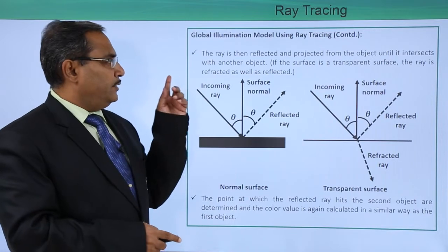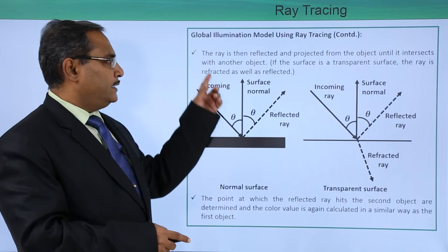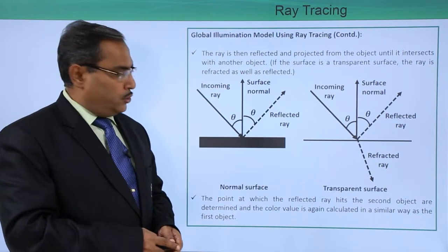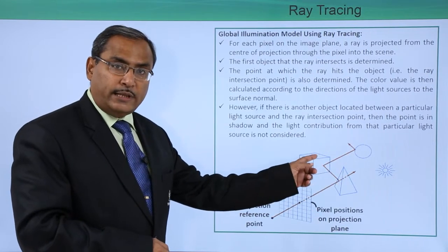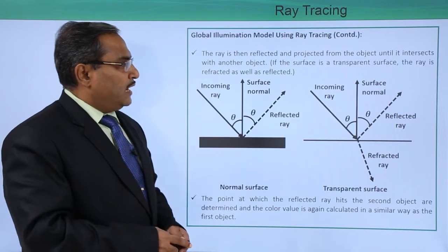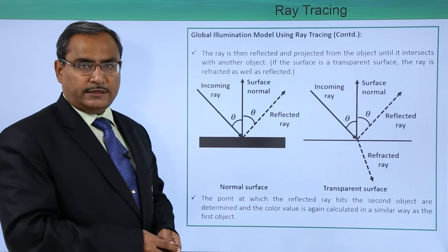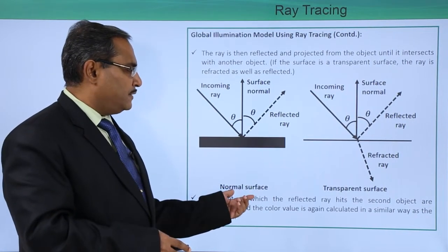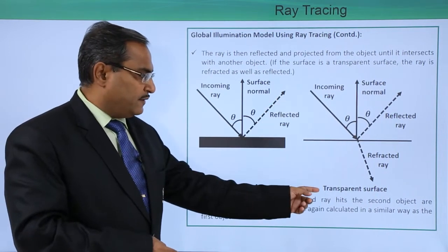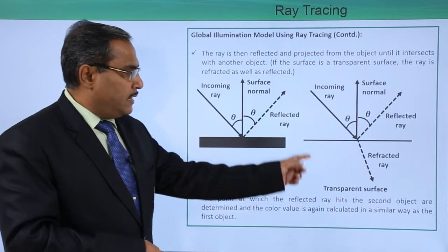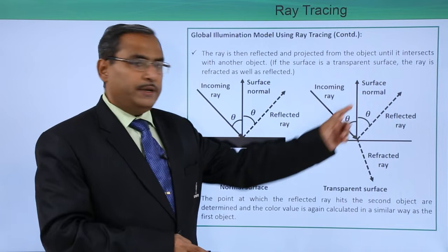The ray is then reflected and projected from the object until it intersects with another object. If the surface is a transparent surface, the ray is refracted as well as reflected. When the surface is a normal surface, only reflection takes place. But if the surface is transparent, part of the incoming ray will be refracted and the rest will be reflected.